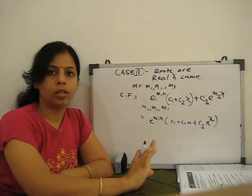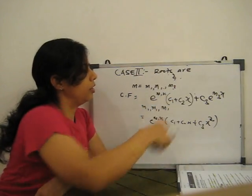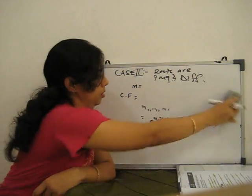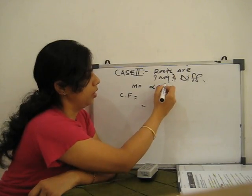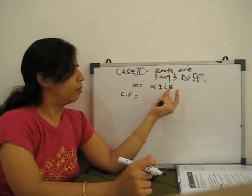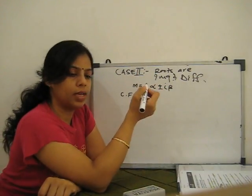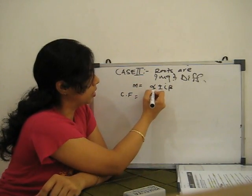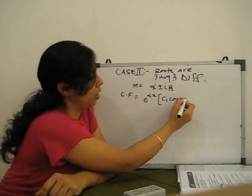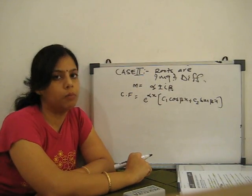Case 3: Roots are imaginary and different. If the roots are α + iβ and α − iβ, then the complementary function is CF = e^(αx)·(c1·cos(βx) + c2·sin(βx)), where α is the real part and β is the coefficient of the imaginary part.